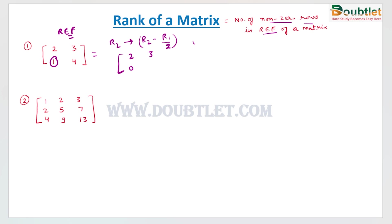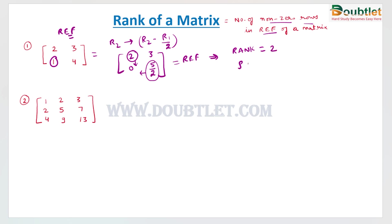After applying the operation, this will become zero, and this will become four minus three by two, so it will become five by two. This is the row echelon form — the leading element has all zeros below it, and in the second row, the leading element has all zeros to its left. The number of non-zero rows is two, so the rank of matrix A is two.